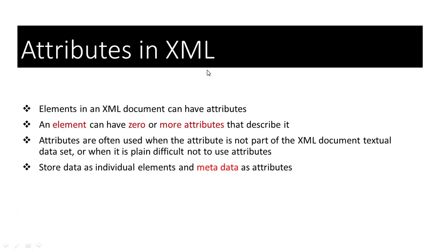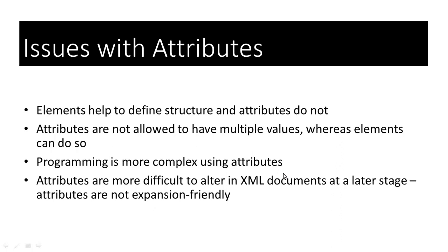We can use attributes in XML. Elements in an XML document can have zero or more attributes that describe them. Attributes are often used when the attribute is not part of the XML document's textual dataset, or when it is difficult not to use attributes. Store data as individual elements and metadata as attributes. However, there are some issues with attributes: elements help define structure and attributes do not. Attributes are not allowed to have multiple values, whereas elements can. Programming is more complex using attributes, and attributes are not expansion-friendly.